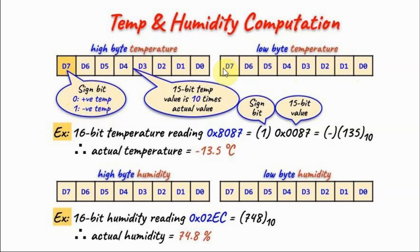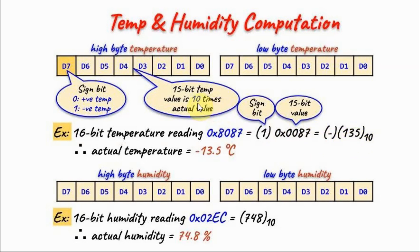The 15-bit value of temperature is 10 times the actual value. As an example, let's say we have a 16-bit temperature reading given by a 16-bit hex value. When we decompose this number, we see that the sign bit is 1, meaning the temperature is negative. The 15-bit value translates to decimal minus 135. Since this is 10 times the actual value, we divide by 10 and get the actual temperature: minus 13.5°C.